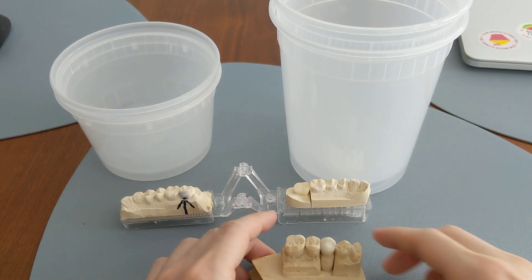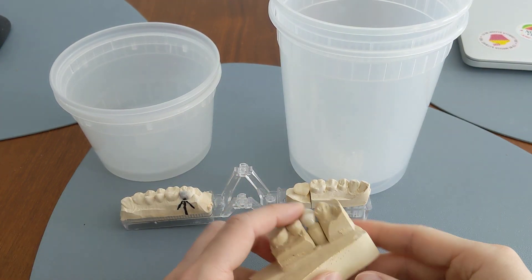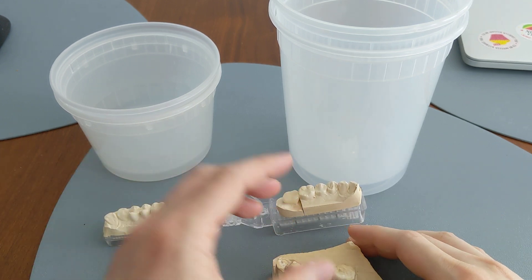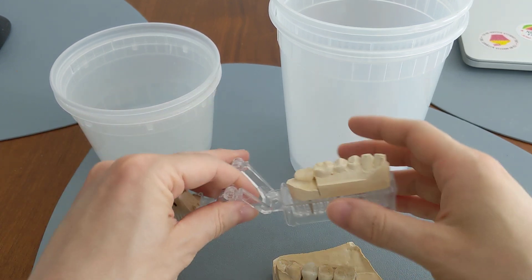Essentially what this means is that if you have a zirconia crown that keeps coming off, the reason could be because you have a very short clinical crown, so the crown can't hold on as well.